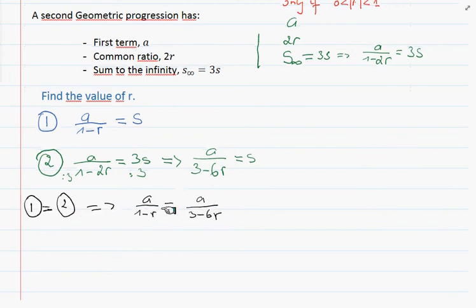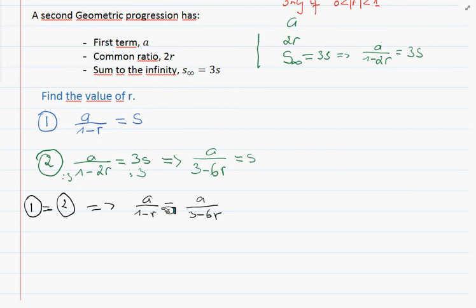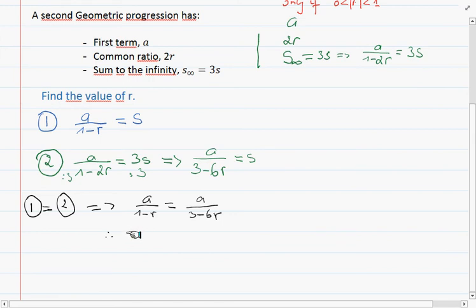Now by cross multiplying, the a will cancel out, so we will have therefore 3 minus 6r equals to 1 minus r. We cross multiply and the a cancels out.